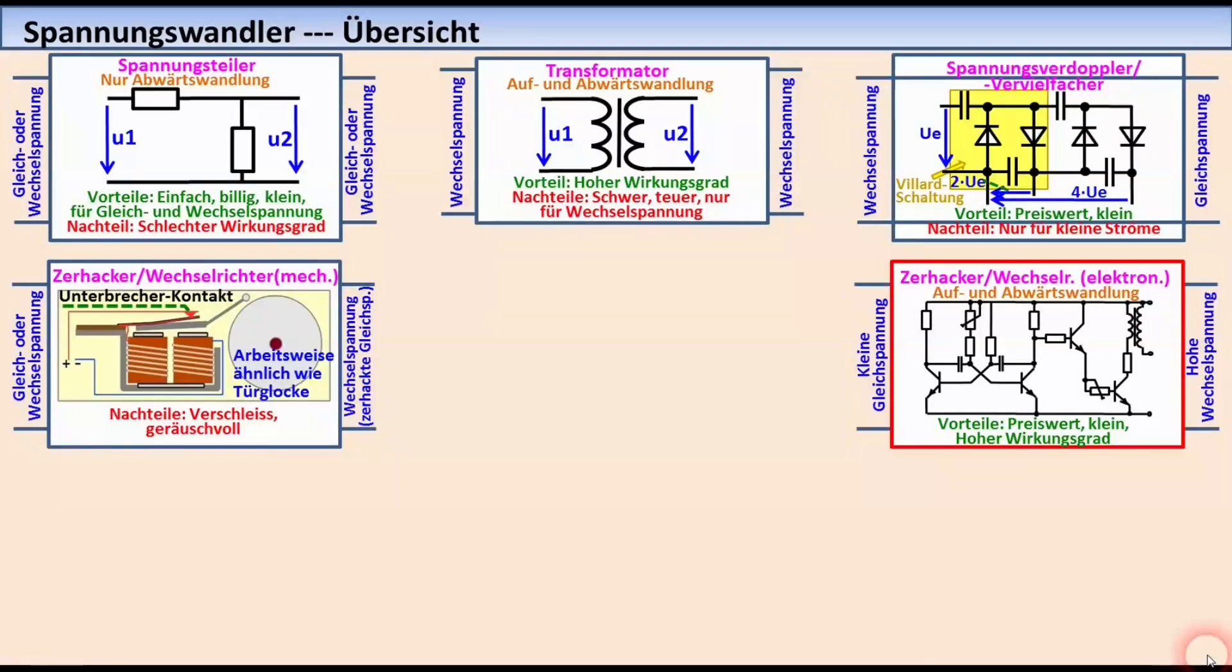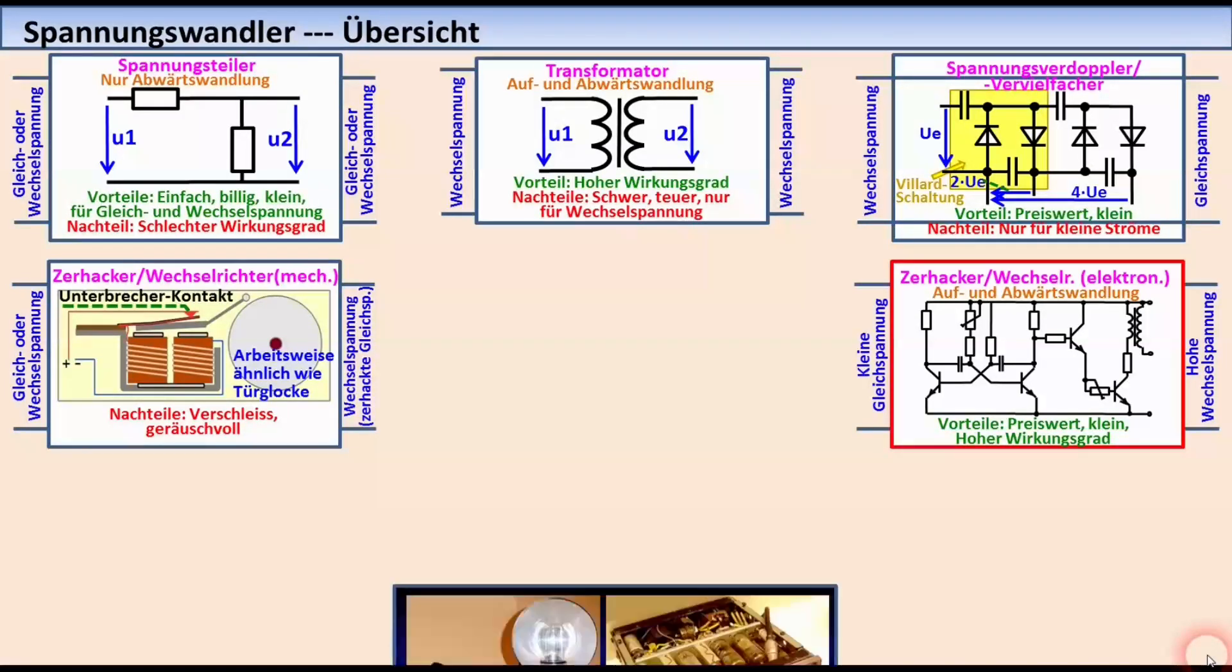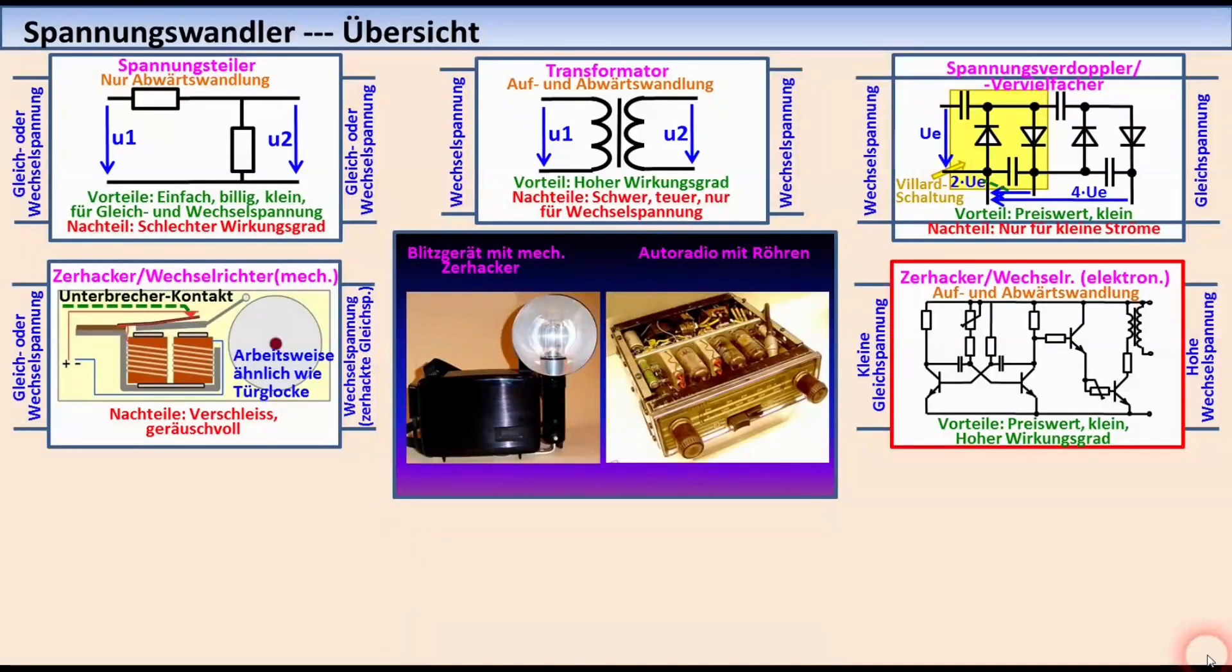Ein Zerhacker erzeugt durch periodisches Unterbrechen eines Gleichstromes eine rechteckförmige Wechselspannung. Mechanisch wird das zum Beispiel gemacht in einer Türklingel, elektronisch zum Beispiel in einer astabilen Kippschaltung. Durch einen nachgeschalteten Travo kann auch eine Aufwärtswandlung erfolgen. Mechanische Zerhacker wurden auch in den ersten Elektronenblitzgeräten und in röhrenbestückten Autoradios verwendet.